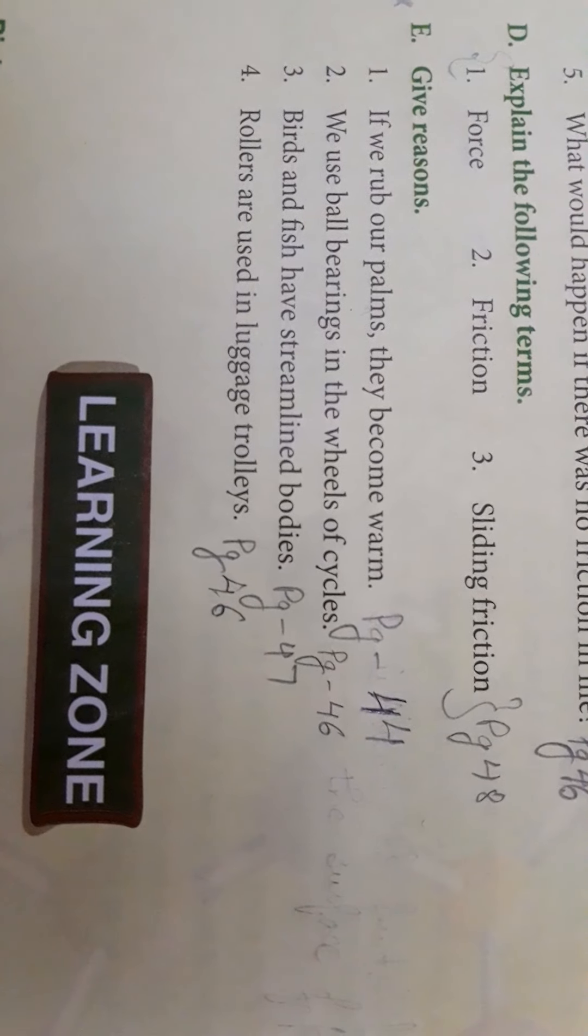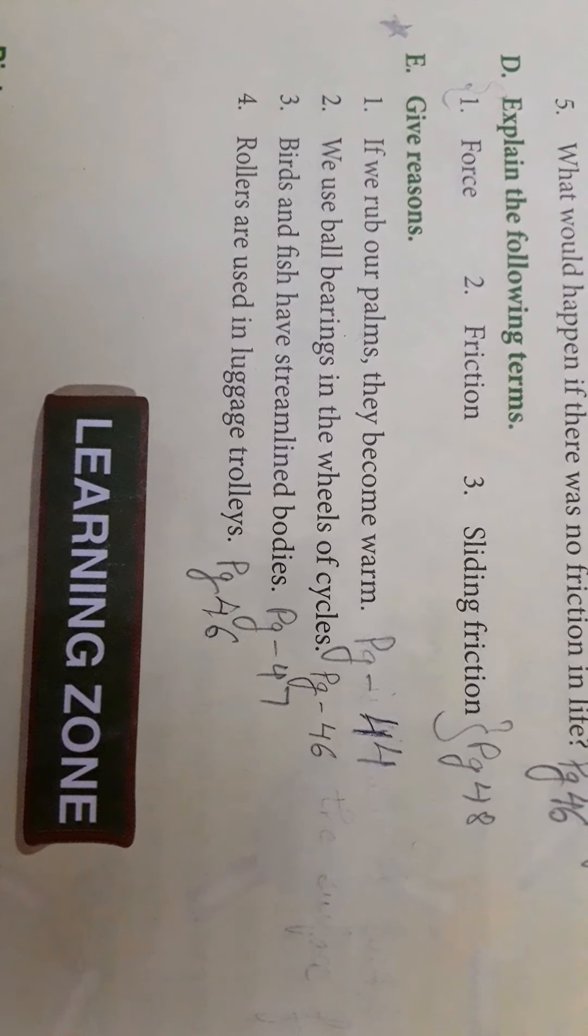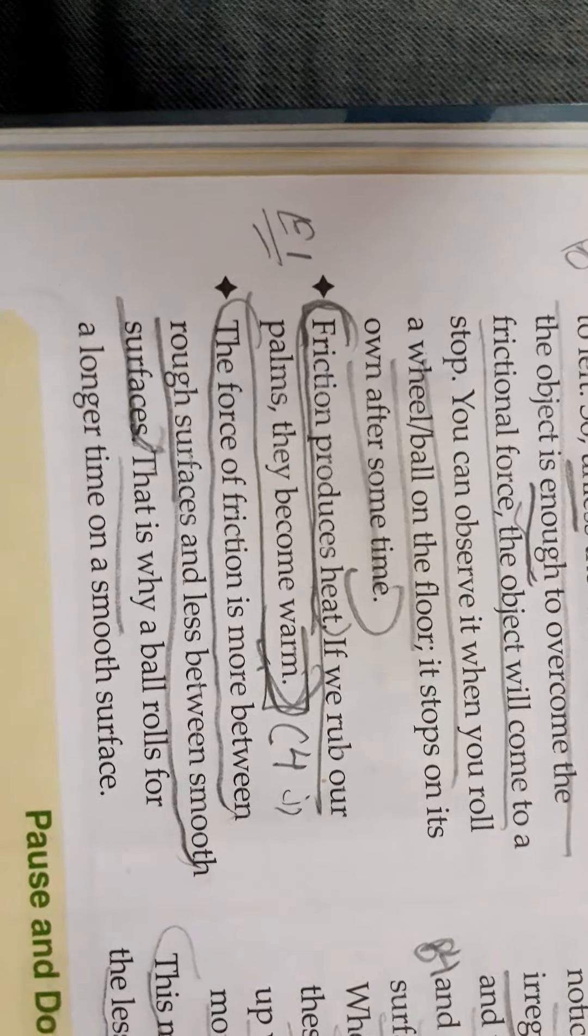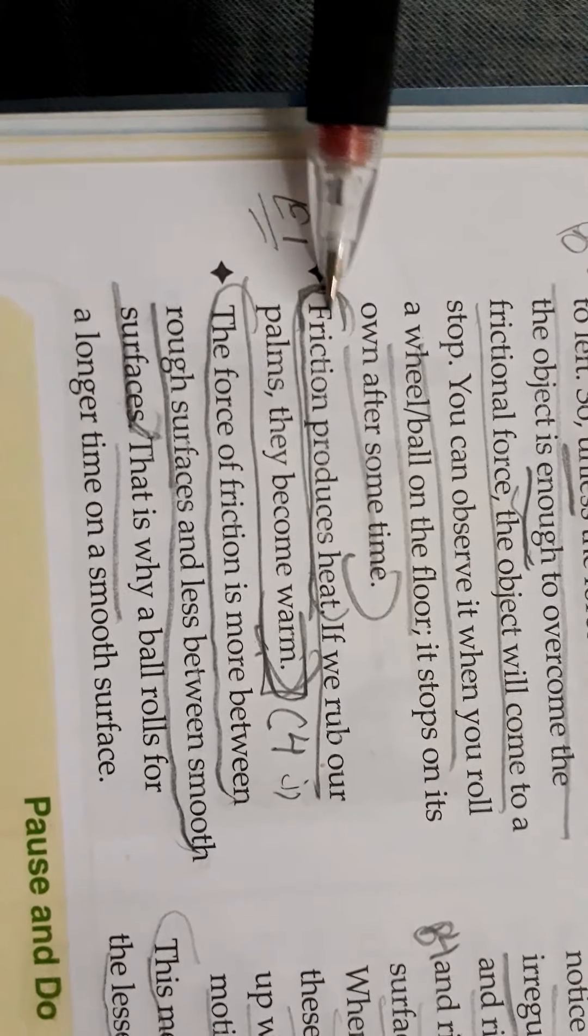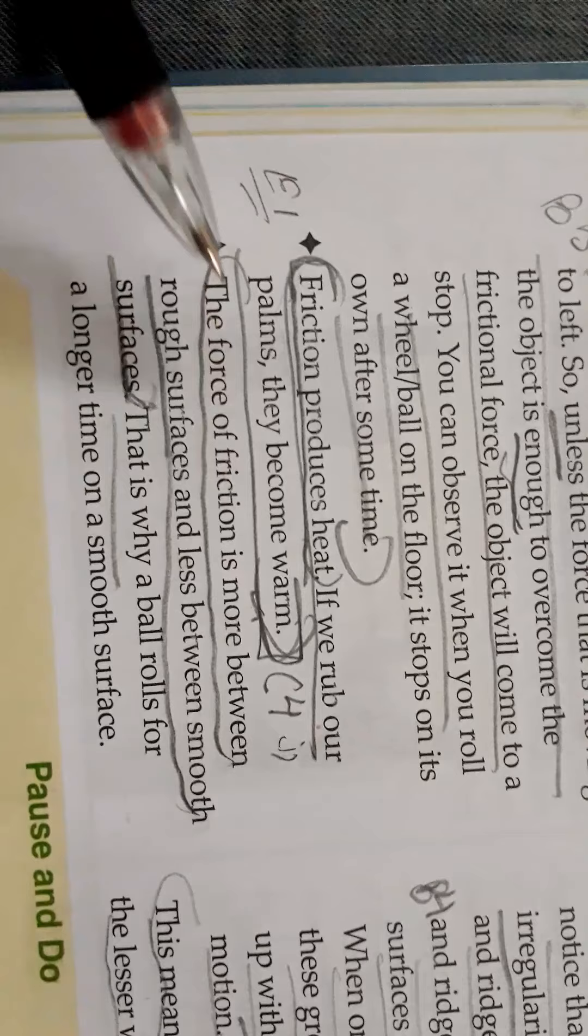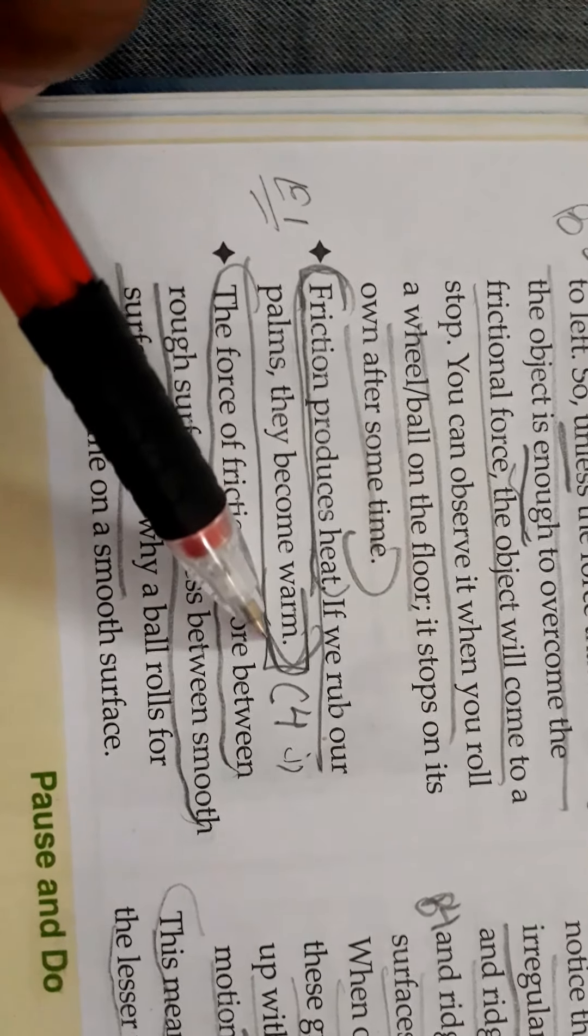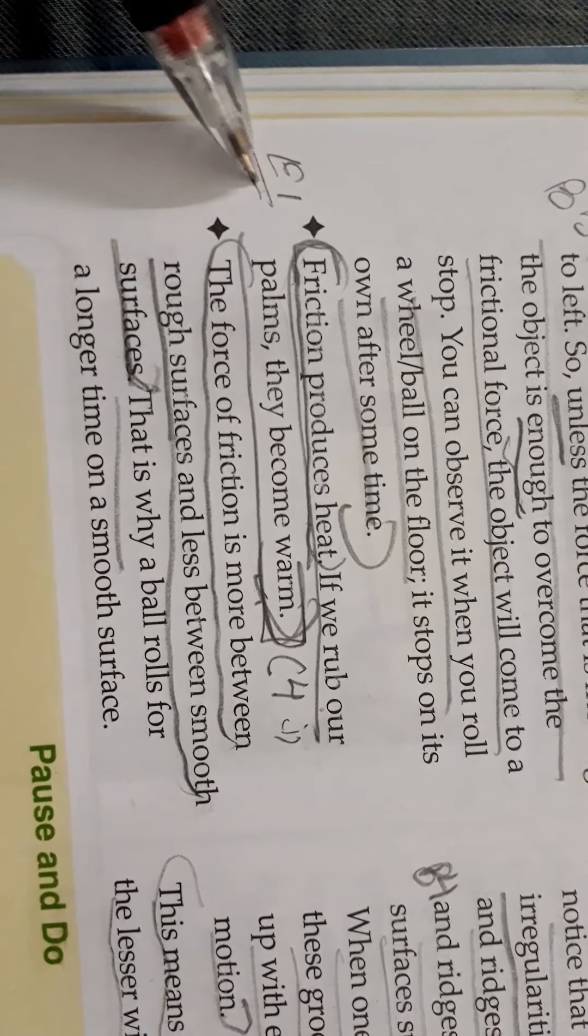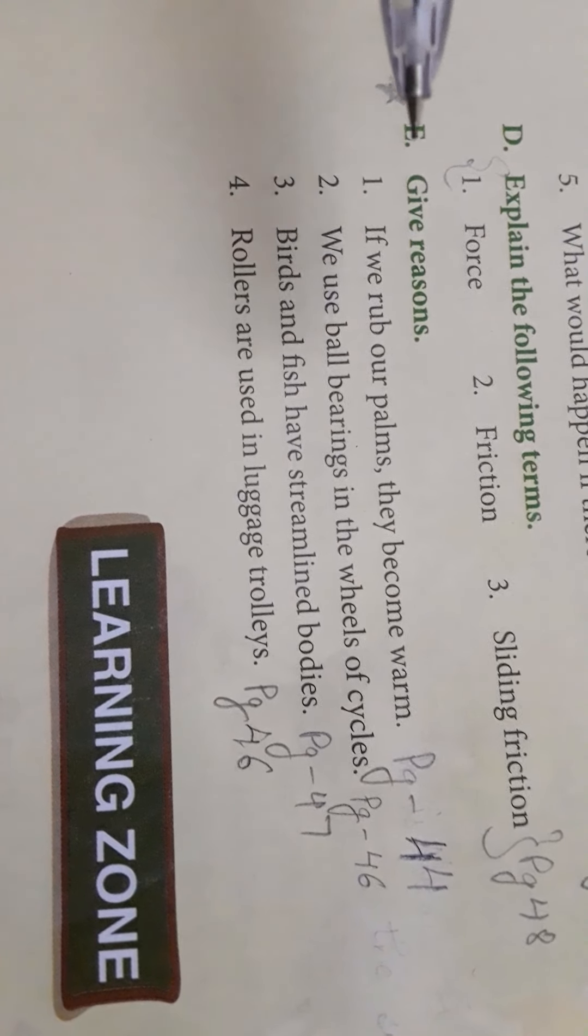Welcome to School of Math and Science. Today I'll discuss the give reason answers with you. The first one: if we rub our palms they become warm, page number 44. The friction produces heat. If we rub our palms, they become warm. That's the E1 answer. I'll also discuss the back exercise with you guys today.